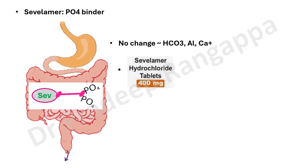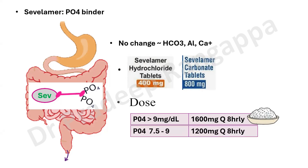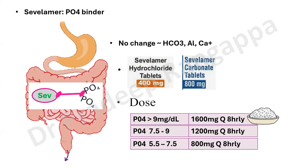Sevelamer is available as 400 mg and 800 mg, either as tablets or powder. It is available as Sevelamer hydrochloride or Sevelamer carbonate. For dosing: if phosphate is more than 9 mg/dL, the higher dosage of 1600 mg three times a day is prescribed. If phosphate is 7.5 to 9, the dose is 1200 mg three times a day. If phosphate is 5.5 to 7.5, the dose is 800 mg three times a day. All doses must be taken with meals.